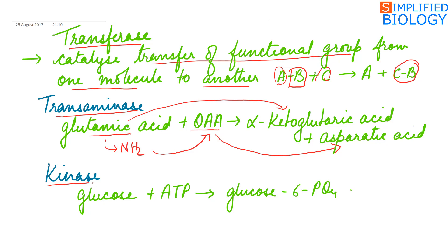Another example is kinase enzyme. Kinase is used wherever ATP is being used or formed. It catalyzes the transfer of a phosphate group from ATP to glucose to form glucose-6-phosphate.